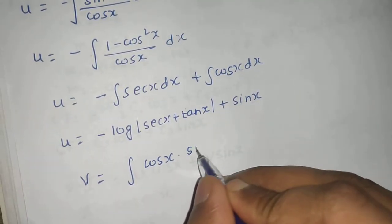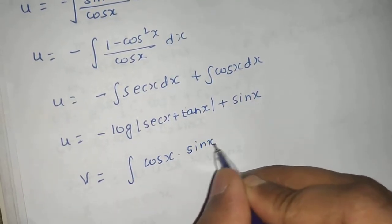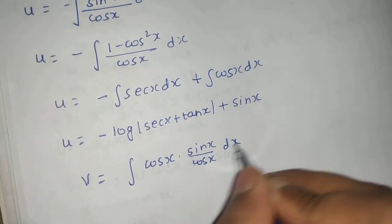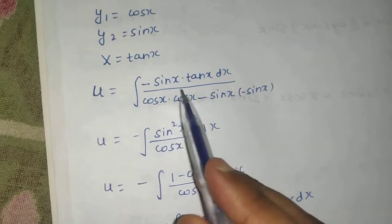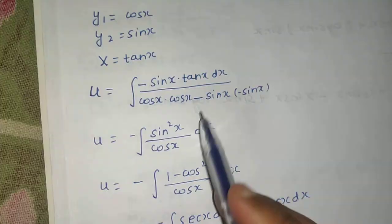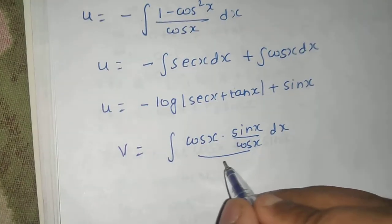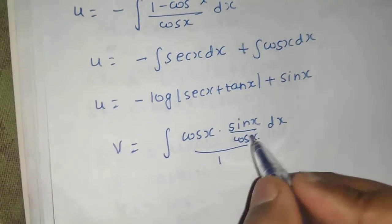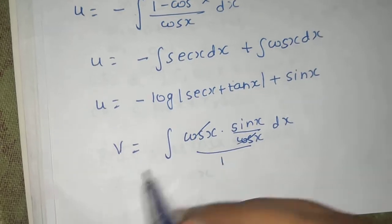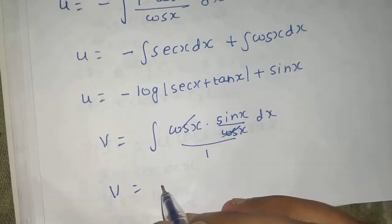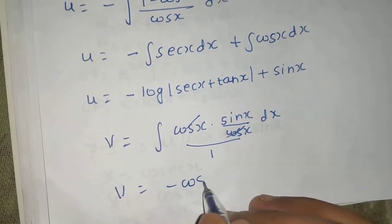X is tan x = sin x / cos x. So v = integral of cos x · (sin x / cos x) divided by 1, which simplifies to integral of sin x. Therefore v = −cos x.